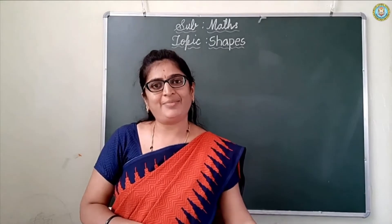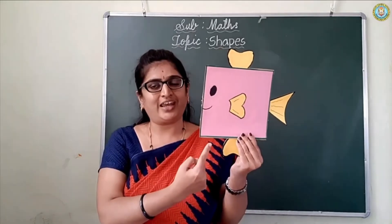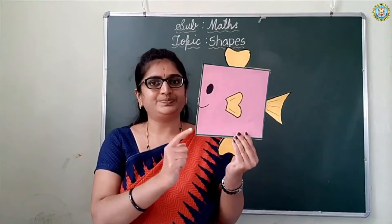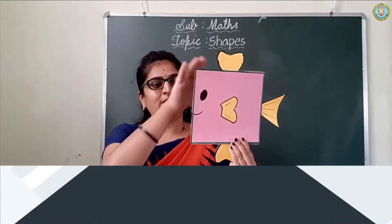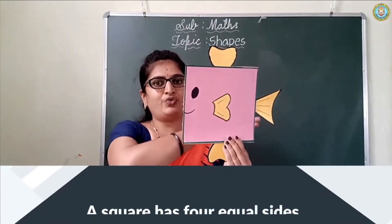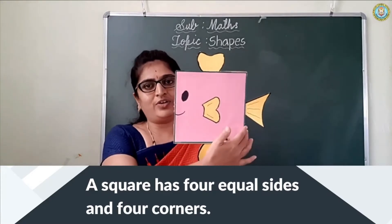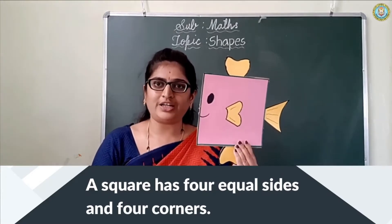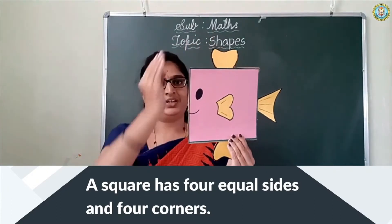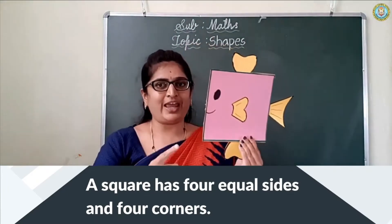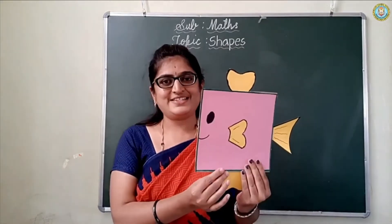Our next shape is coming here. Which shape is this, children? This is a square. A square has four sides. See here: one, two, three, four. All the sides are equal. A square has four corners. See here: one, two, three, four. A square has four corners. Very good. Okay, say bye-bye square.